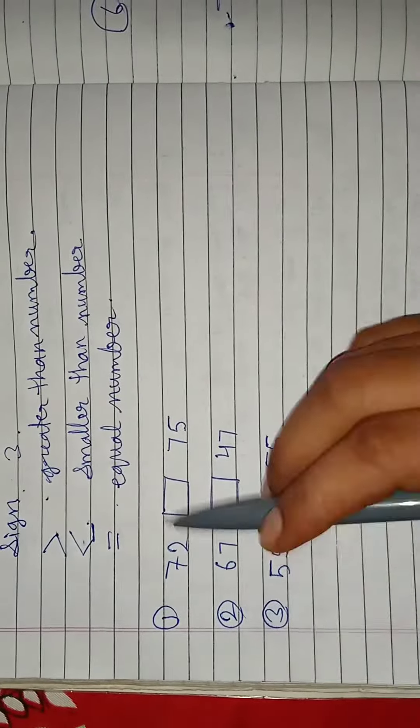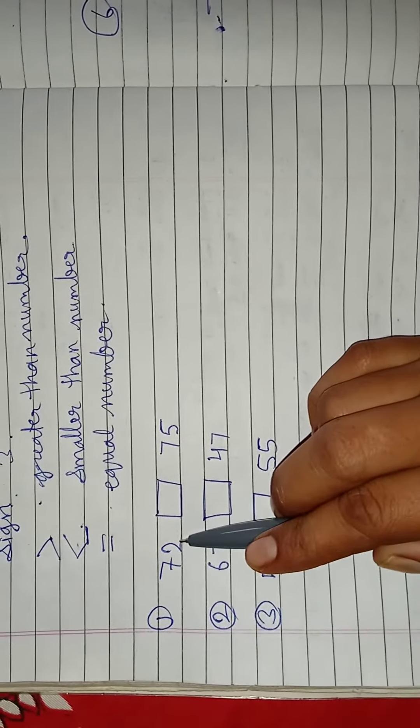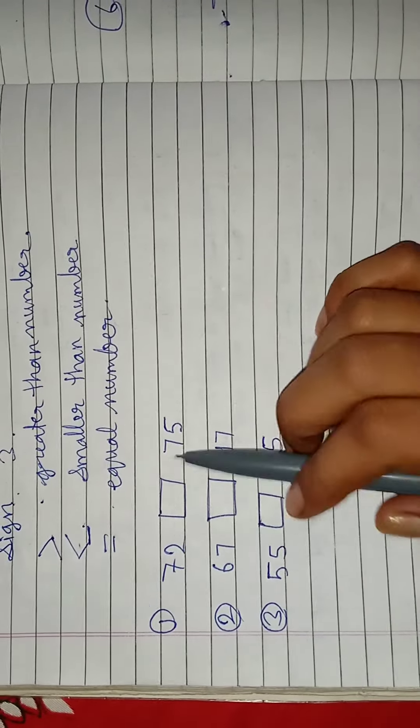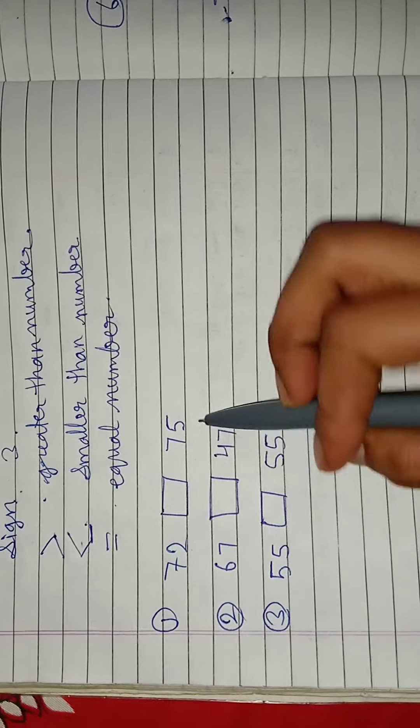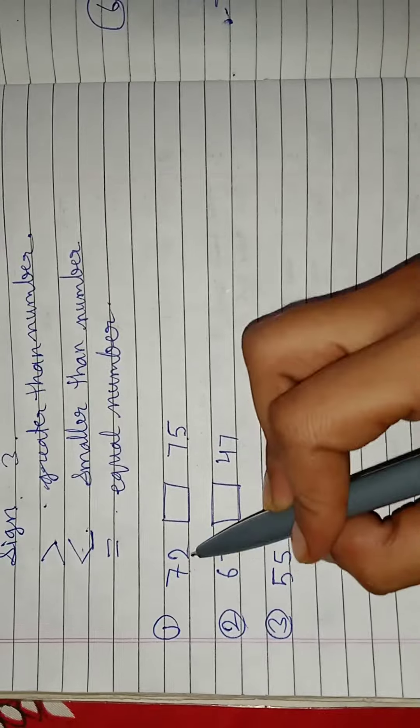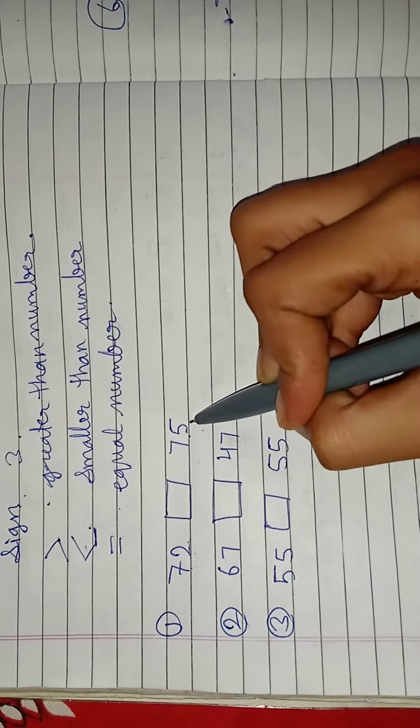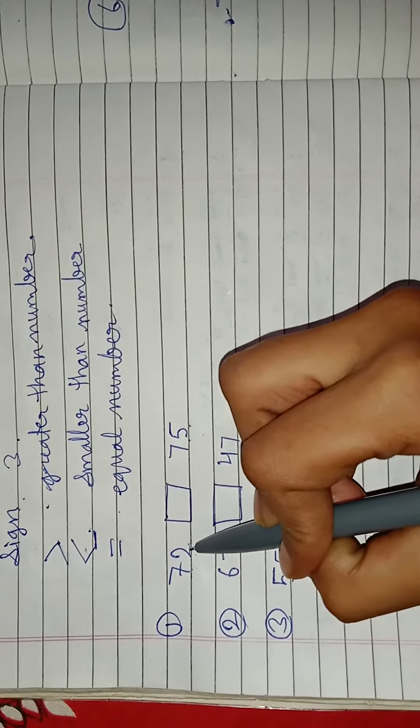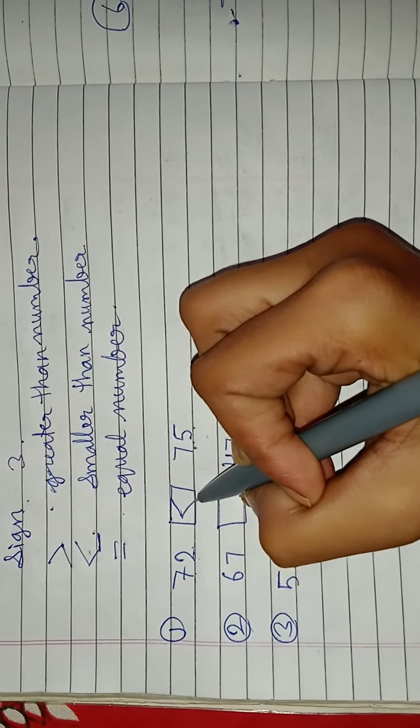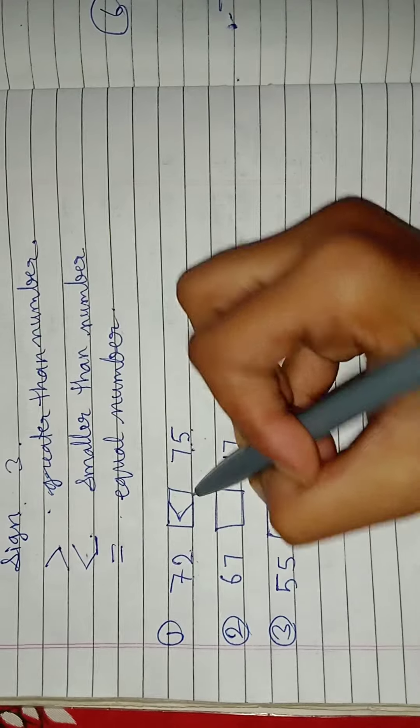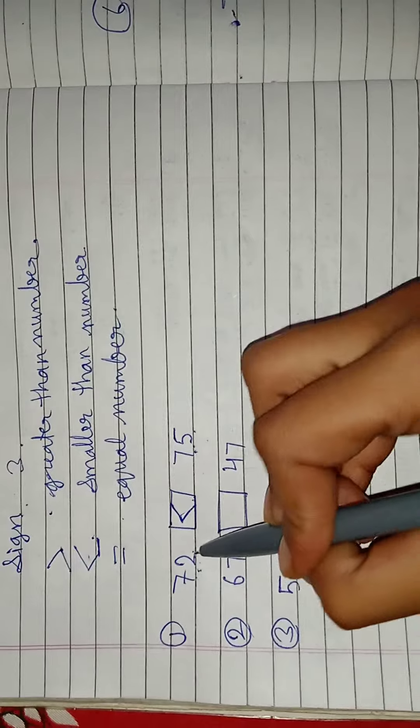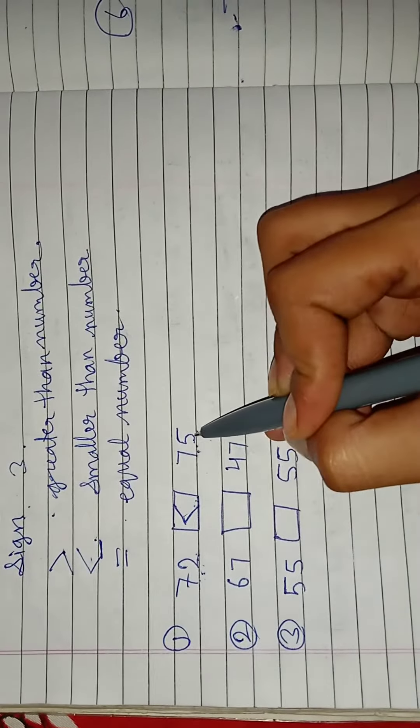An example. First, 72 and 75. Compare the numbers 72 and 75. 72 is less than 75. We use smaller than sign. 72 is smaller than 75.